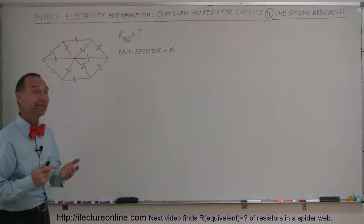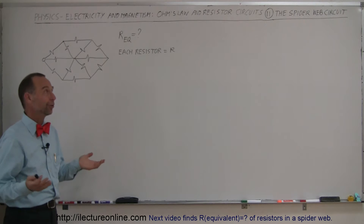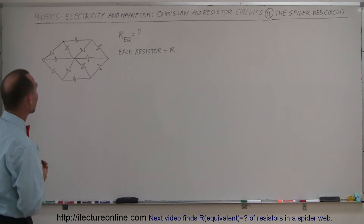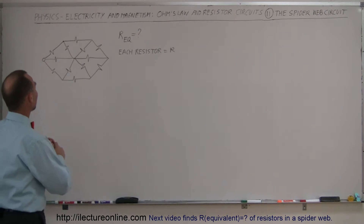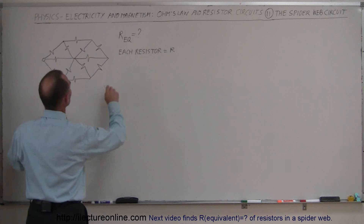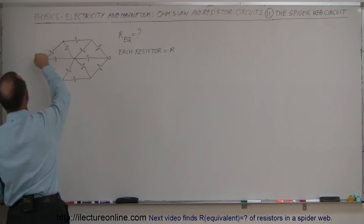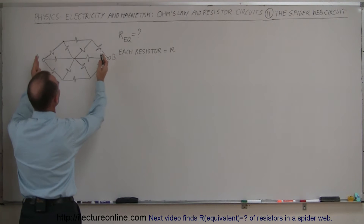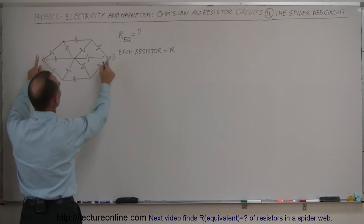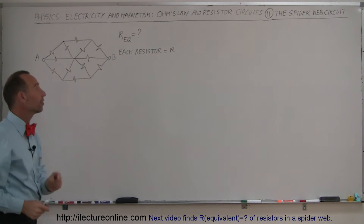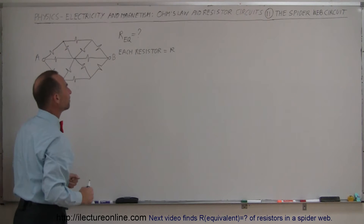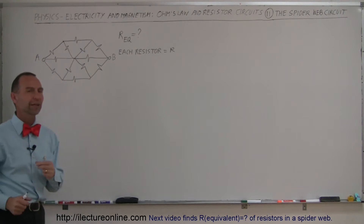For the lack of a better name, I call it the spiderweb circuit — it kind of looks like a spiderweb. What we're trying to do here is find the equivalent resistance of this circuit between point A and point B. If there was a single resistor that could replace this whole circuit, what would it be? So how do we figure that out?